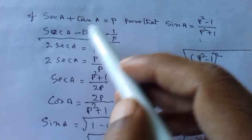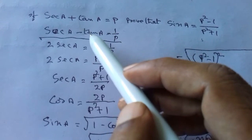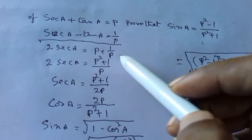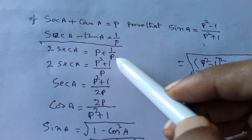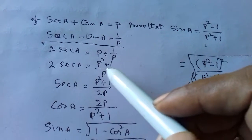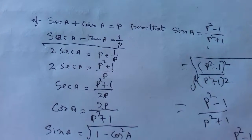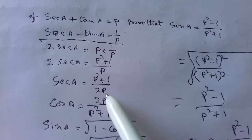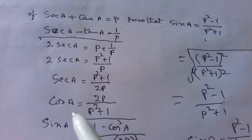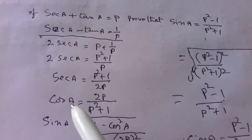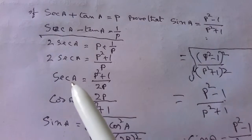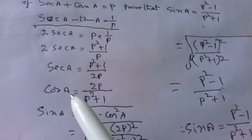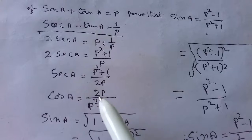Adding these two equations, tanA minus tanA is cancelled, then 2 secA is equal to P plus 1 by P, which gives 2 secA equal to P square plus 1 by P. Therefore secA is equal to P square plus 1 by 2P, and cosA is equal to 2P by P square plus 1.